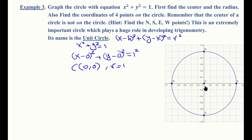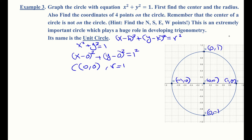Since the center is at (0, 0), we go one unit to the right, up, left, and down to get our four points. The east point is (1, 0), the west point is (−1, 0), the north point is (0, 1), and the south point is (0, −1). Connect them in a circular manner to get the graph.